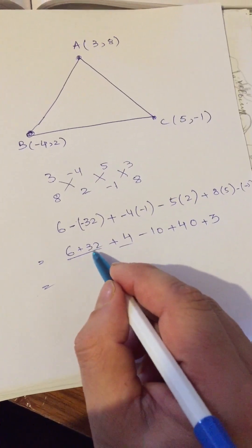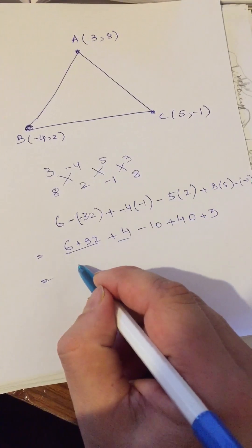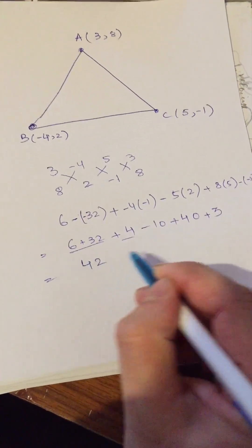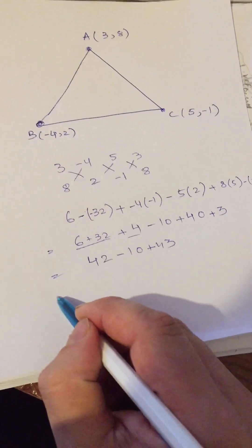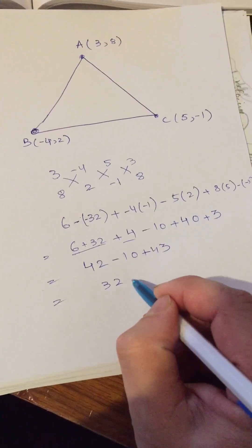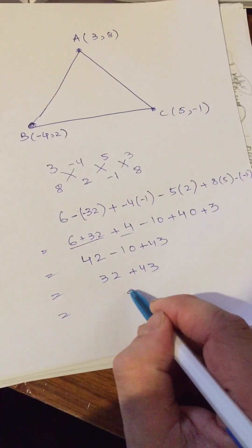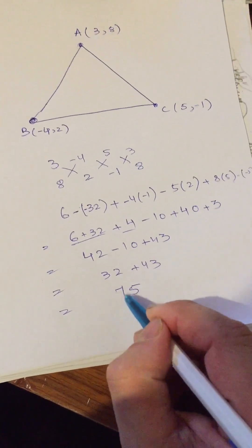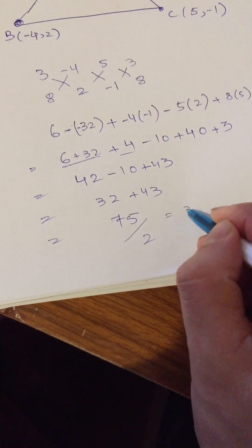It is 32 plus 6, it is 32 plus 6 plus 4. It is 42 minus 10 plus 43, it is 32 plus 43, it is 75.